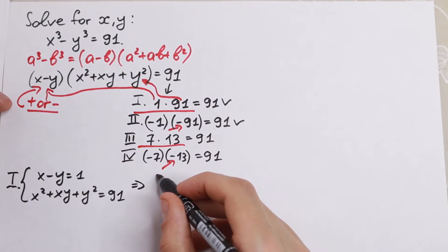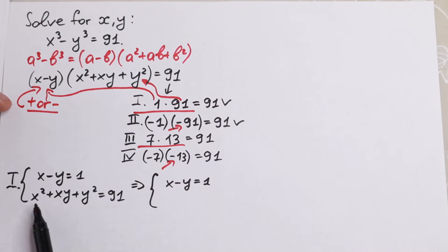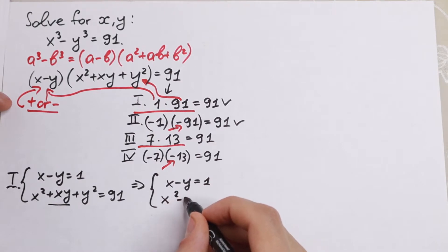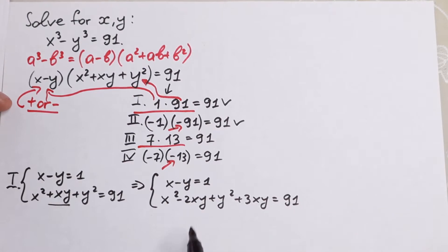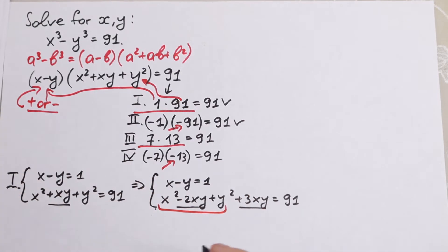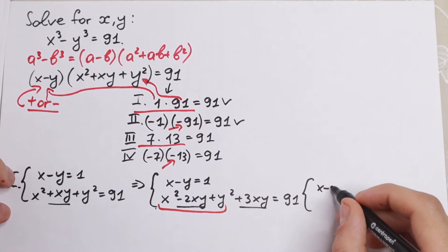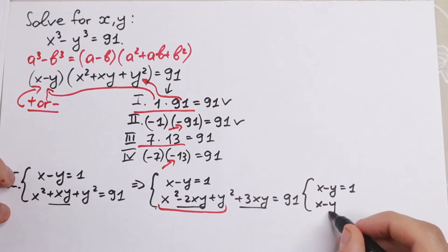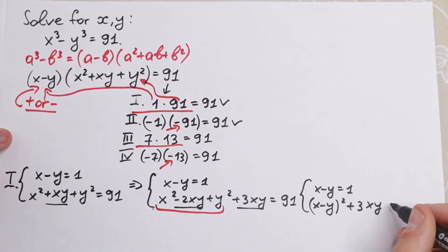We rewrite the second equation by splitting xy as 3xy minus 2xy. This gives us (x squared minus 2xy plus y squared) plus 3xy equals 91, which becomes (x minus y) squared plus 3xy equals 91.